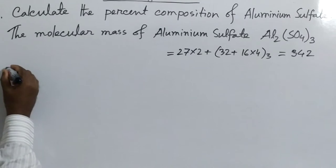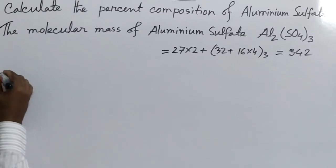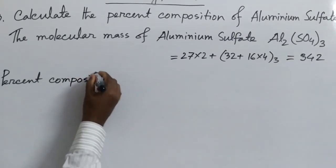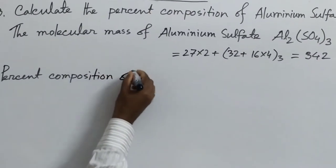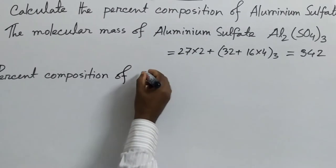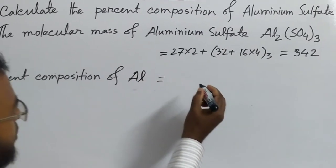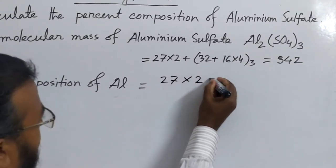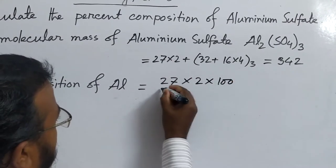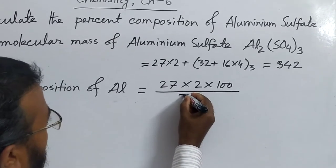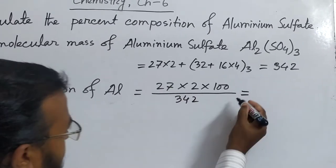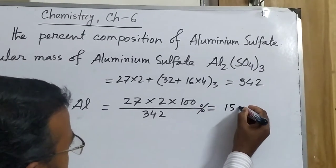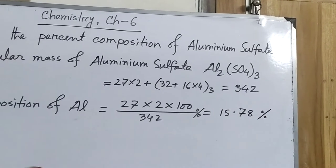Now we find the percent composition. First, aluminum: the formula is atomic mass × number of atoms × 100 ÷ molecular mass. For aluminum: 27 × 2 × 100 ÷ 342. We get 15.78 percent.